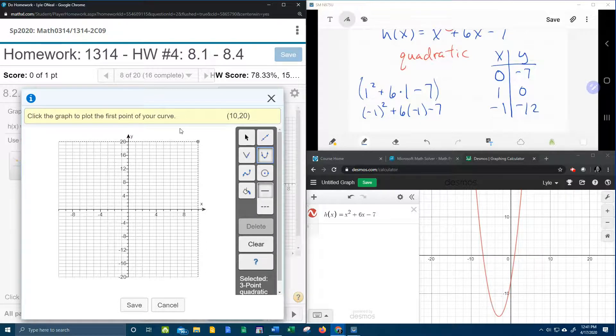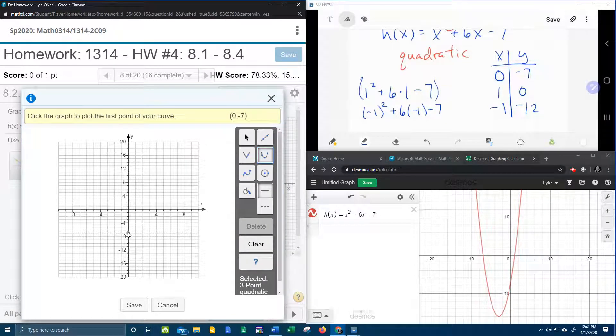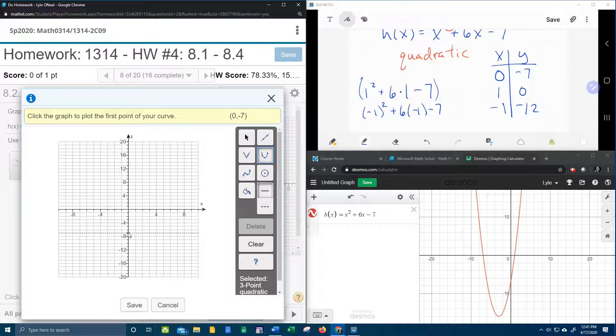Alright, so these are going to be three good points. Now let's plot them, 0, negative 7, notice in the upper right hand corner, I can see 0, negative 7 is where I'm at, so I know that that's the right place to click,